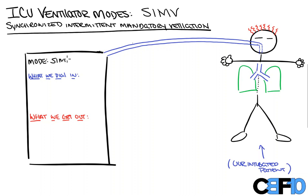So we're going to label this SIMV, and we're going to talk about in the same order: what we dial in, then how it works, and then what we're going to get out as a result. Just like in AC mode, we're going to dial in our FiO2, which is our percent oxygen. We're going to dial in our rate, also seen as F on the machine for frequency. We're going to dial in our tidal volume and our PEEP. Now there is one more thing we're going to dial in here that we didn't necessarily see on AC mode, and this is a pressure support. We'll explain what that's for during this as well.